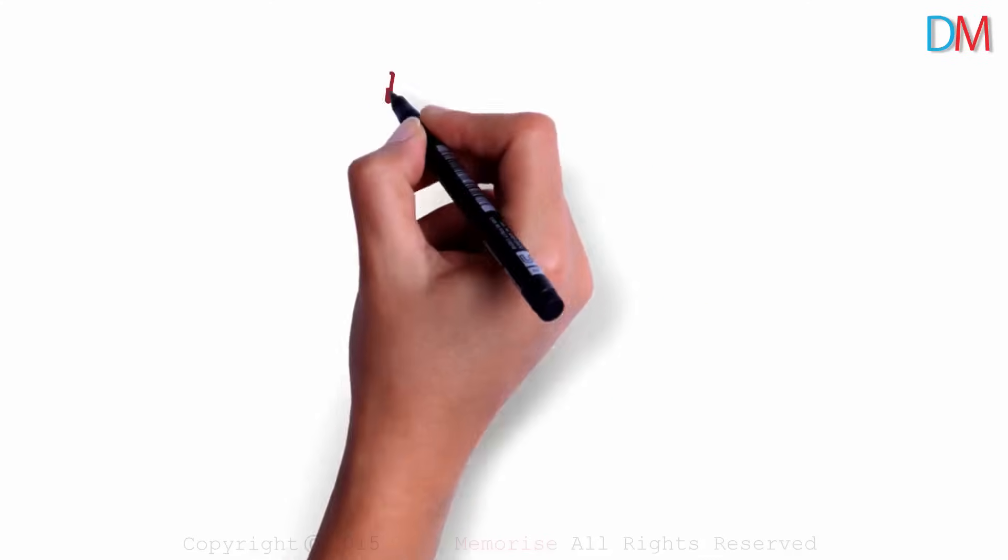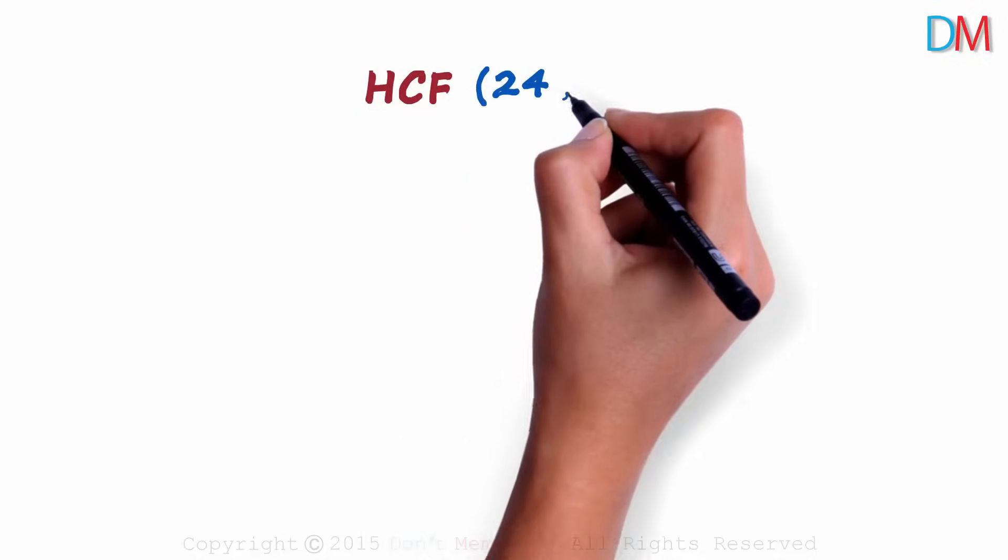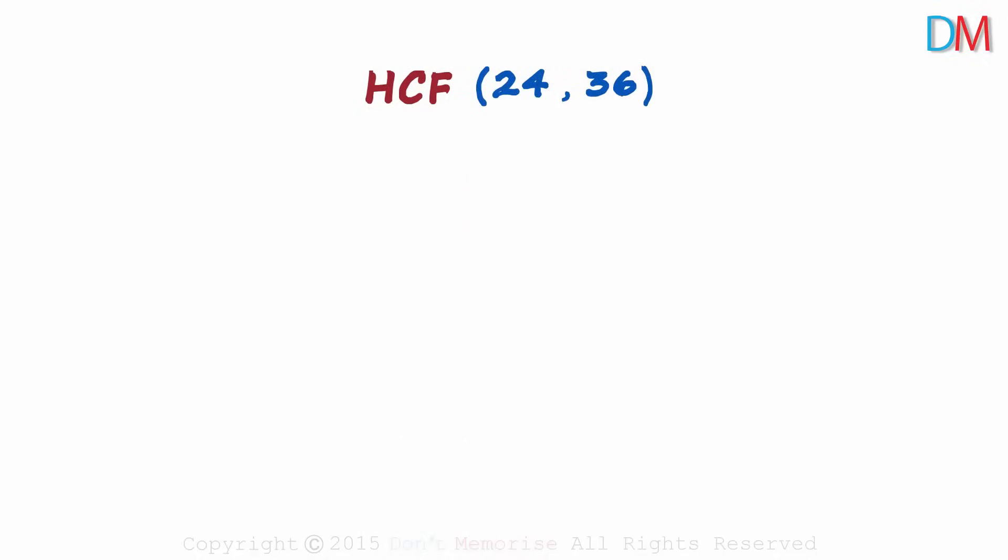Let's say we want to find the HCF of 24 and 36. What we need to do is very simple. We just have to reduce the numbers to its prime factors, and we can do that using upside down division.